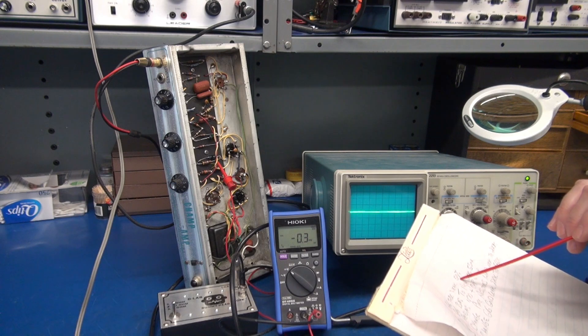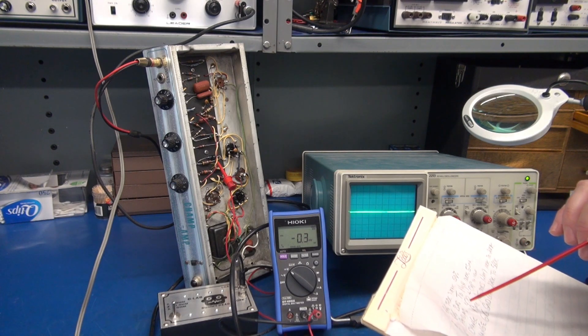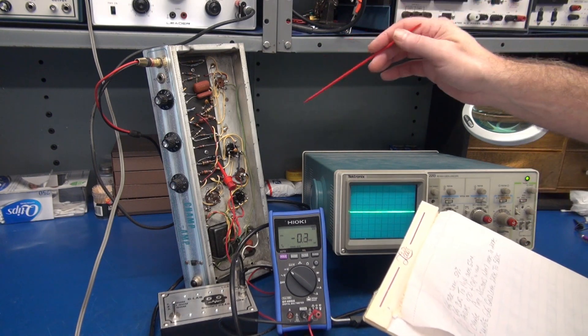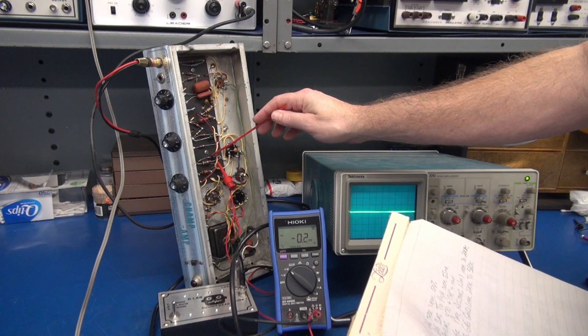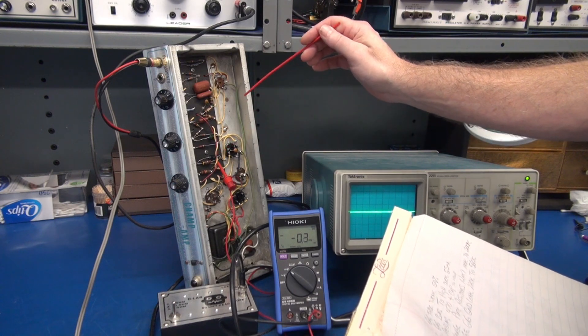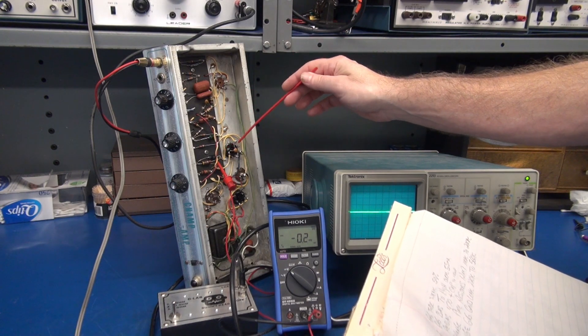So we're going to put in a fresh 6V6 tube. We're going to re-bias that 6V6 tube and we're going to change the capacitor from 25 microfarad to 100 microfarad across the new bias resistor.